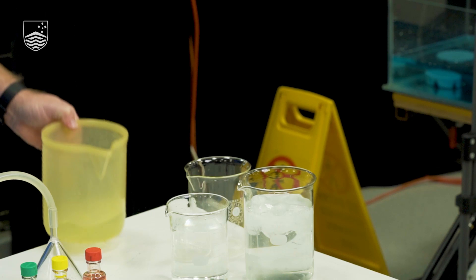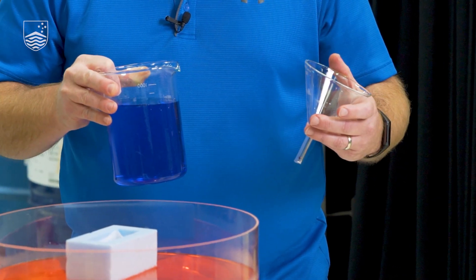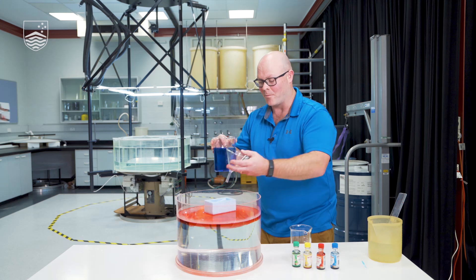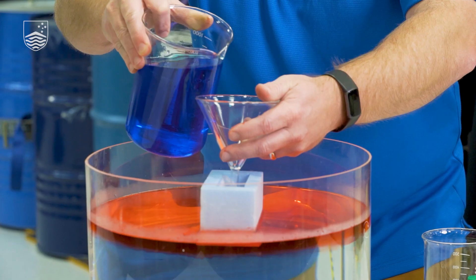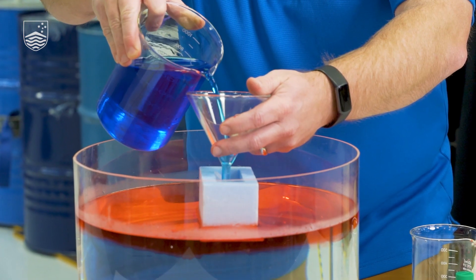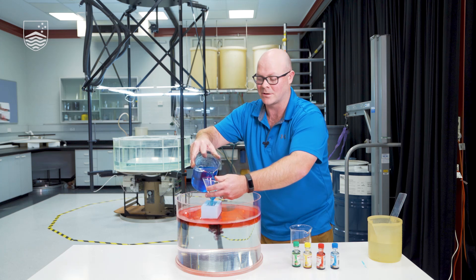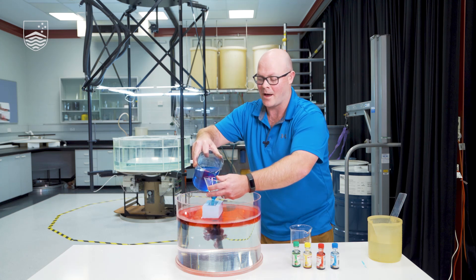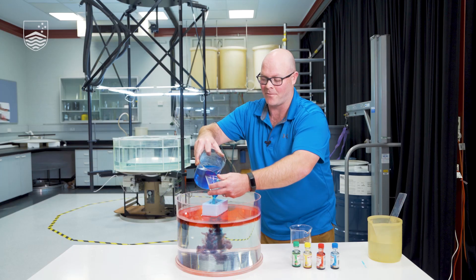So now what we're going to do is introduce some cold water. We're going to do it in exactly the same way as we did the warm water by gently pouring it through this sponge. Now this sponge can be any sort of material, any sort of spongy material that you've got. We're using it to just very gently introduce that water into the container and dampen any of the momentum that might come from us pouring the water in. Now what you can see with this cold water as it's going in is that it's going straight to the bottom.